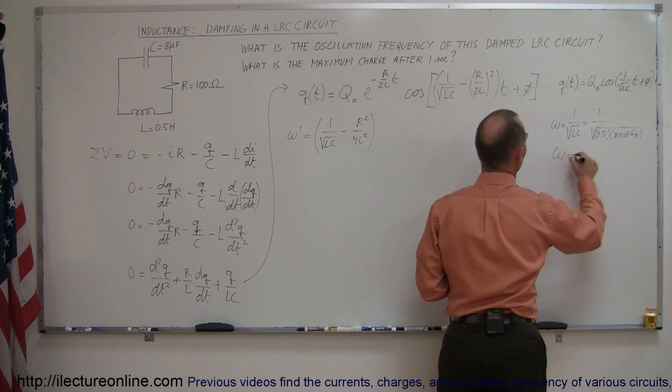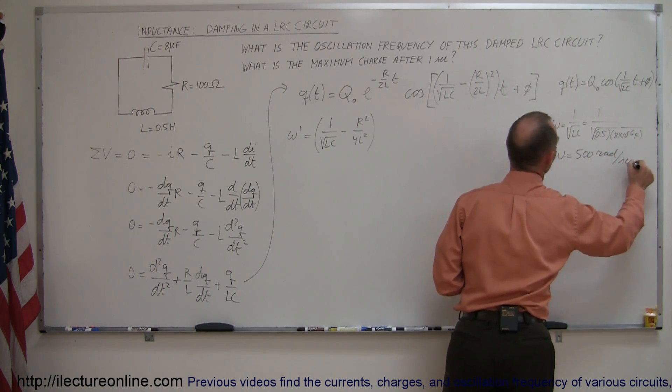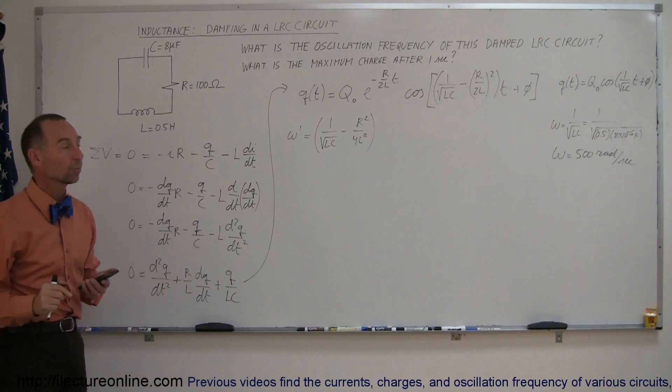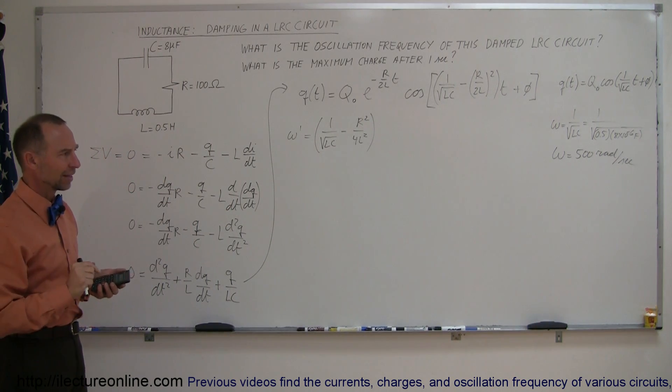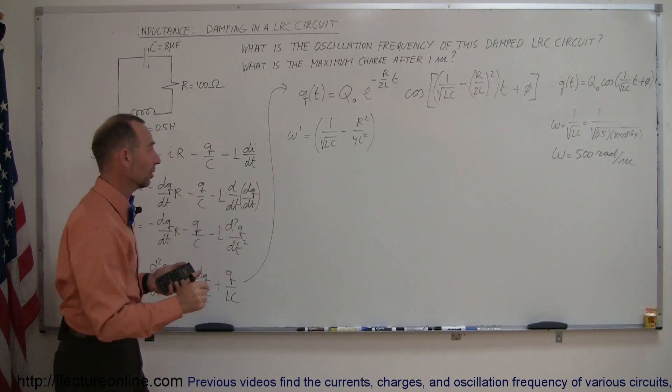So the oscillation frequency in radians per second of the undamped circuit if the resistor wasn't there was 500 radians per second which was about 80 cycles per second.